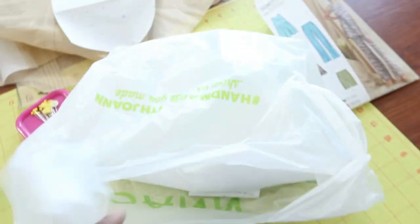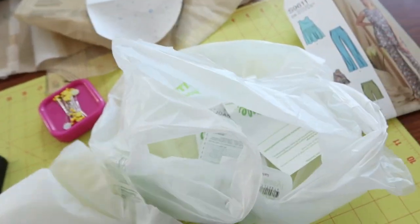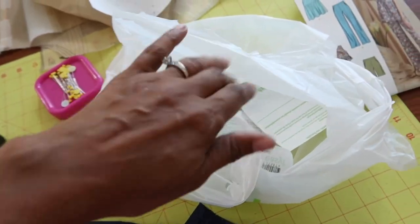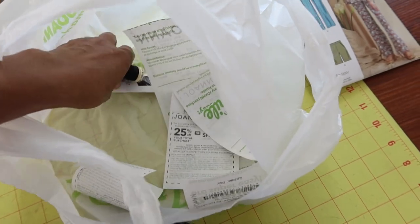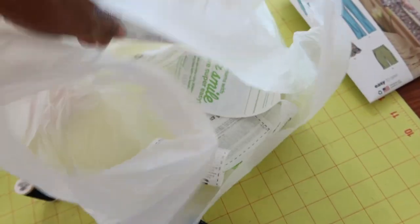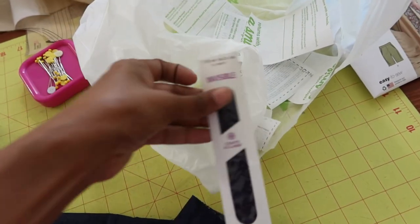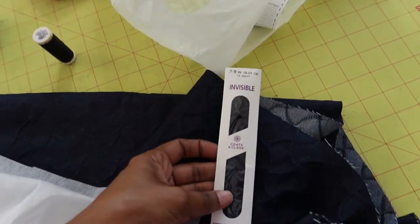I bought some interfacing just because I needed some. This pattern does call for it but I needed a little more in general. Then I bought some thread, some black thread, and the invisible zipper. It calls for a seven inch invisible zipper and I got this in navy.